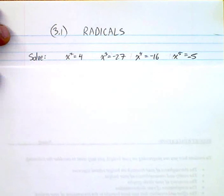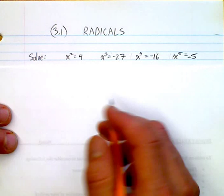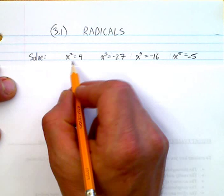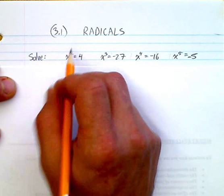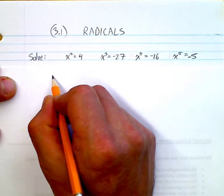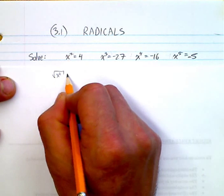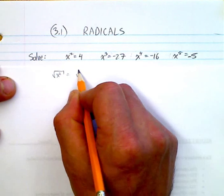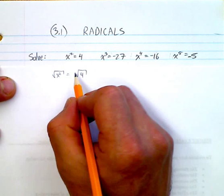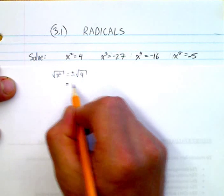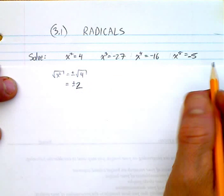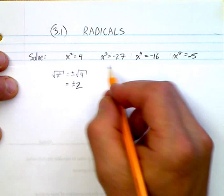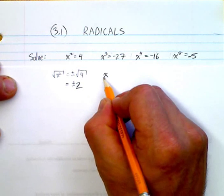Let's have a look and see if we can solve some of these radical equations. When solving radical equations, to get rid of a square you take the square root — so the square root of x squared and the square root of 4. Because we're taking the square root, we put a plus or minus in front, which means the solutions are plus or minus 2. Now if we look at a cubic function, we're going to have to take the cube root.